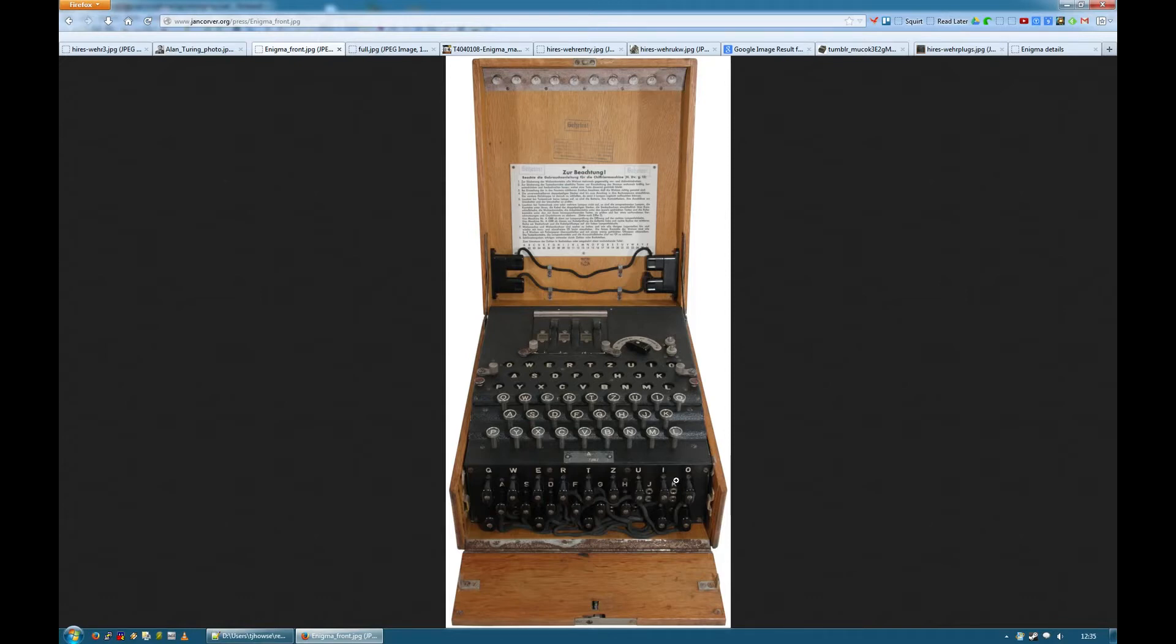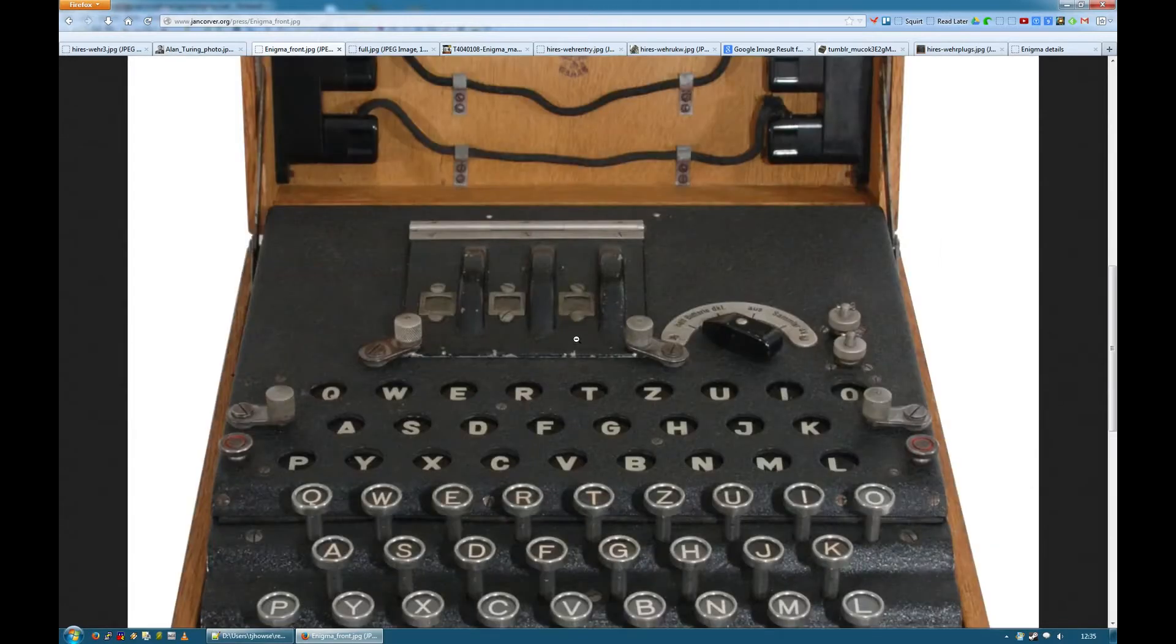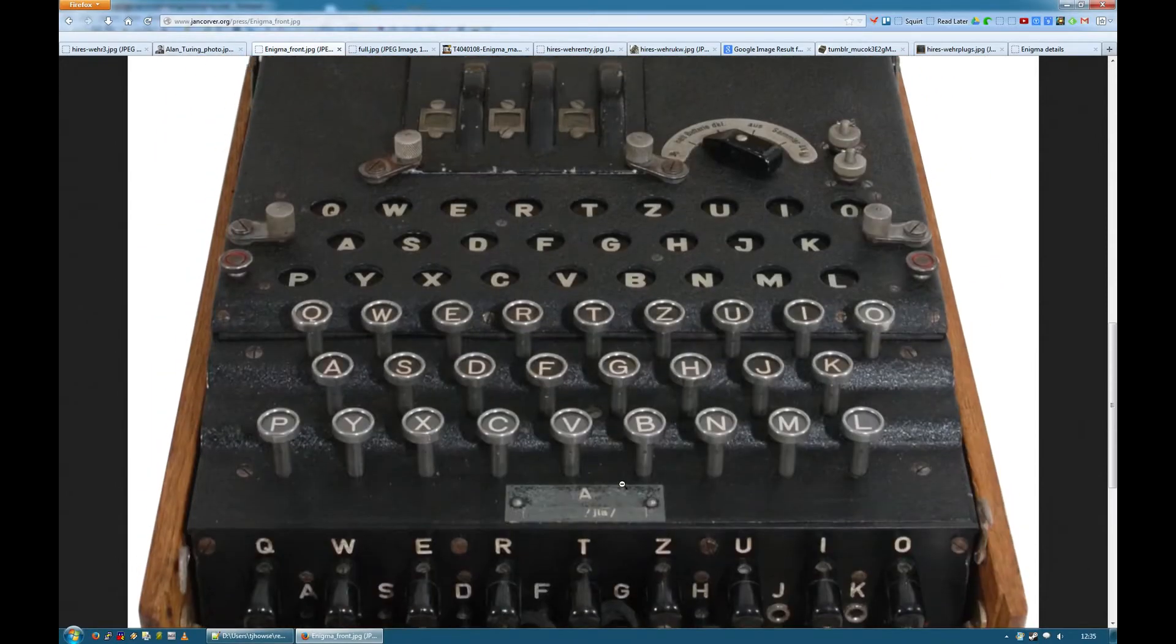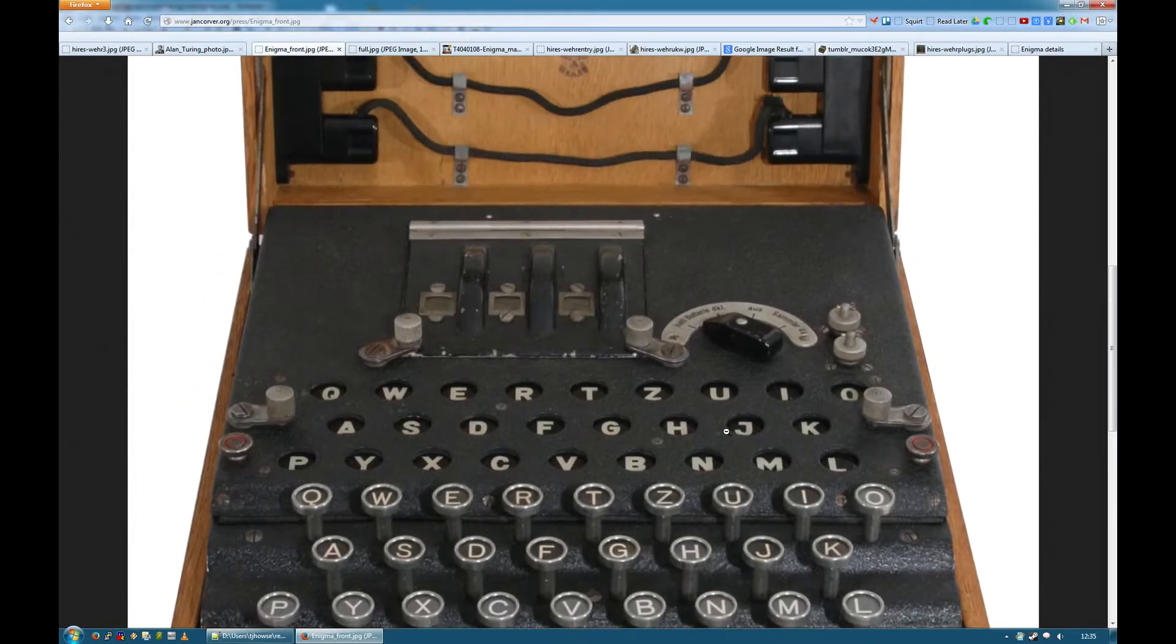So when you receive a message, you will look up the encryption key in your code book. And you'll set the starting position on each of these rotors and you'll set the plugboard settings. And then you'll start punching your ciphertext. And another guy will be reading off what lights up over here.